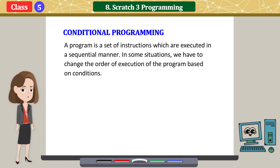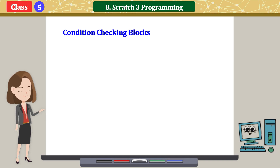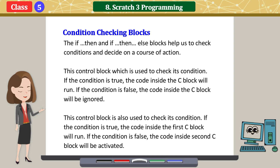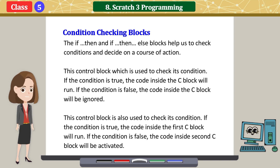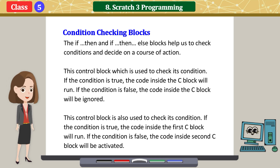Conditional programming: a program is a set of instructions executed in a sequential manner. In some situations we have to change the order of execution based on conditions. The 'If-Then' and 'If-Then-Else' blocks help us check conditions and decide on a course of action. For 'If-Then': if the condition is true, the code inside the C block runs; if false, it is ignored. For 'If-Then-Else': if the condition is true the first C block runs; if false, the second C block is activated.